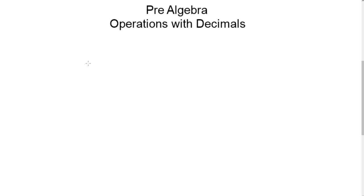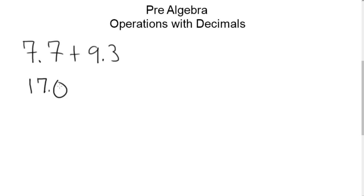Operations with decimals follow the same rules as operations with integers, so we use the same addition, subtraction, multiplication, and division rules. Let's look at a first addition example. If I take 7.7 plus 9.3, you probably do this on your calculator so you will come up with 17.0 or just 17. When I combine two decimals that have the same sign, I add the absolute value and bring down the common sign. In this case the common sign was positive, so 7.7 plus 9.3 equals 17.